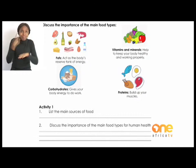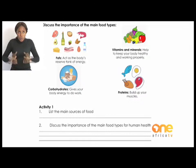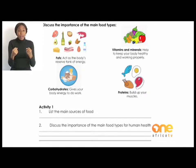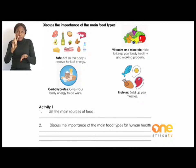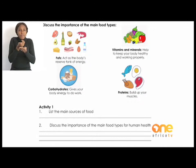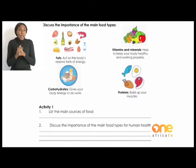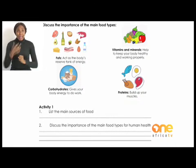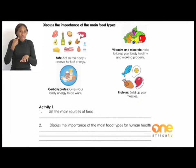Proteins build up your muscles. They repair and replace muscles so your body can keep working — for example if you have a sports injury. Proteins also make red blood cells that carry oxygen around your body, help fight diseases, and heal cuts and wounds. Fats act as the body's reserve tank of energy and protect your organs. It is very important to maintain a balance with fats because too much can cause you to become overweight. Fats are found in avocados, salmon, sunflower seeds and flax seeds.